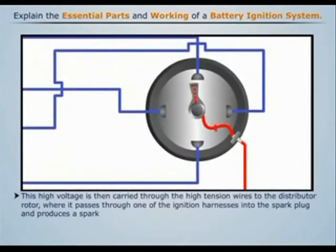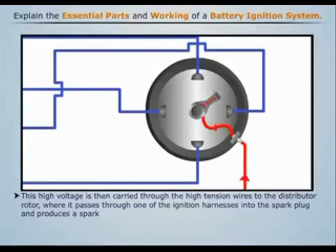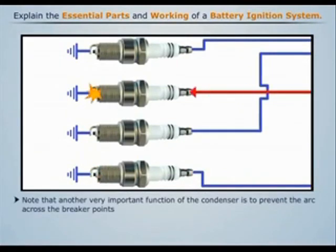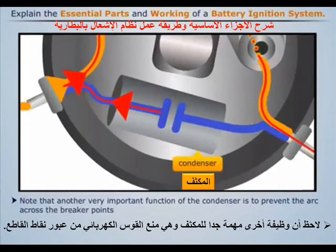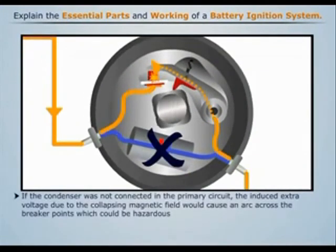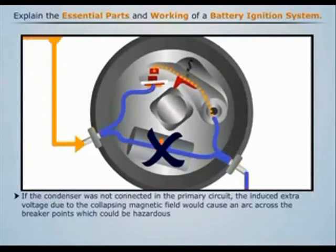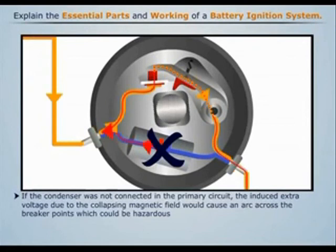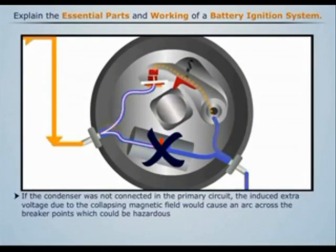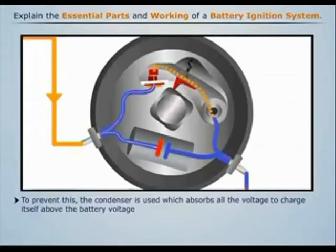This high voltage is then carried through the high tension wires to the distributor rotor, where it passes through one of the ignition harnesses into the spark plug and produces a spark. An important function of the condenser is to prevent arcing across the breaker points. If the condenser was not connected in the primary circuit, the induced extra voltage due to the collapsing magnetic field would cause an arc across the breaker points, which could be hazardous. To prevent this, the condenser absorbs all the voltage to charge itself above the battery voltage.